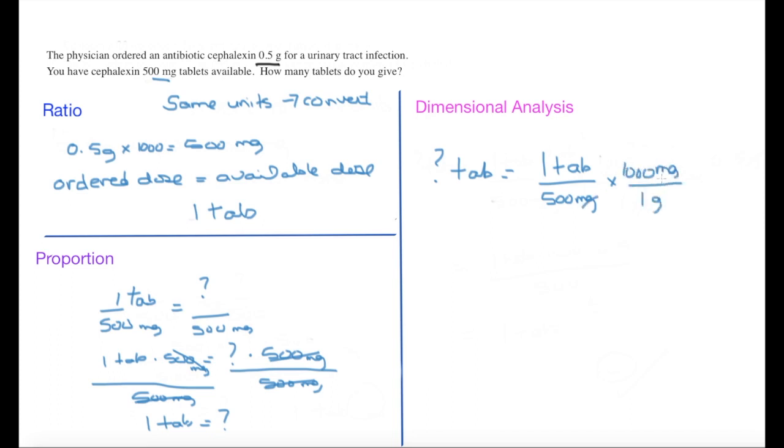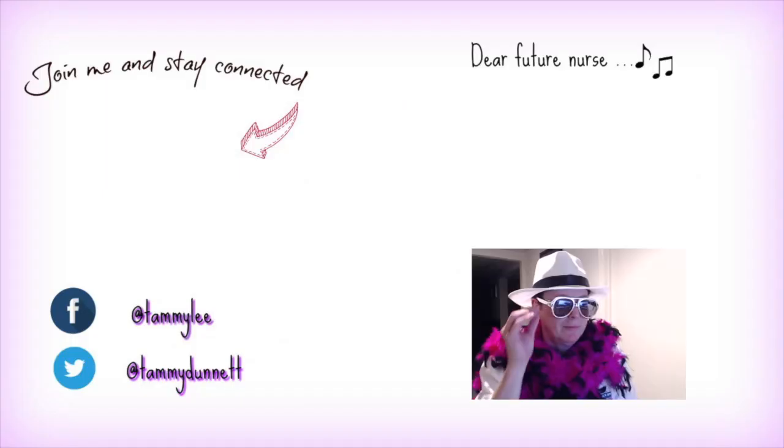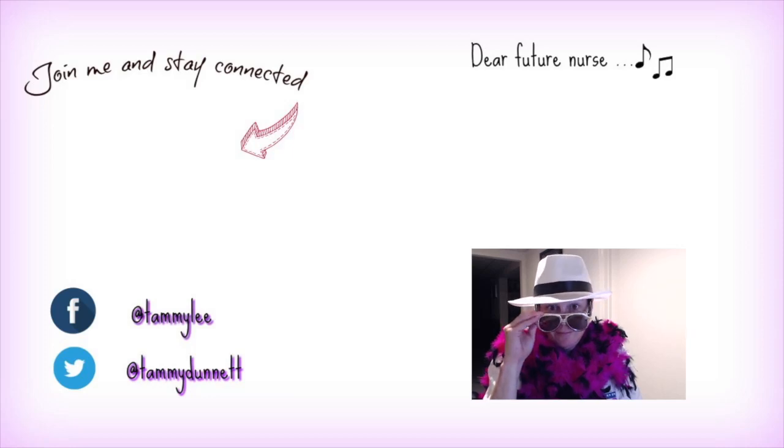I can then cross off the milligrams. I'm left with grams still to get rid of. Back to my question, I say I have a 0.5 gram dose, so I'm going to put that into my formula next. So multiply by 0.5 grams. The grams cross off and I'm left with tabs, and I can go ahead and solve.